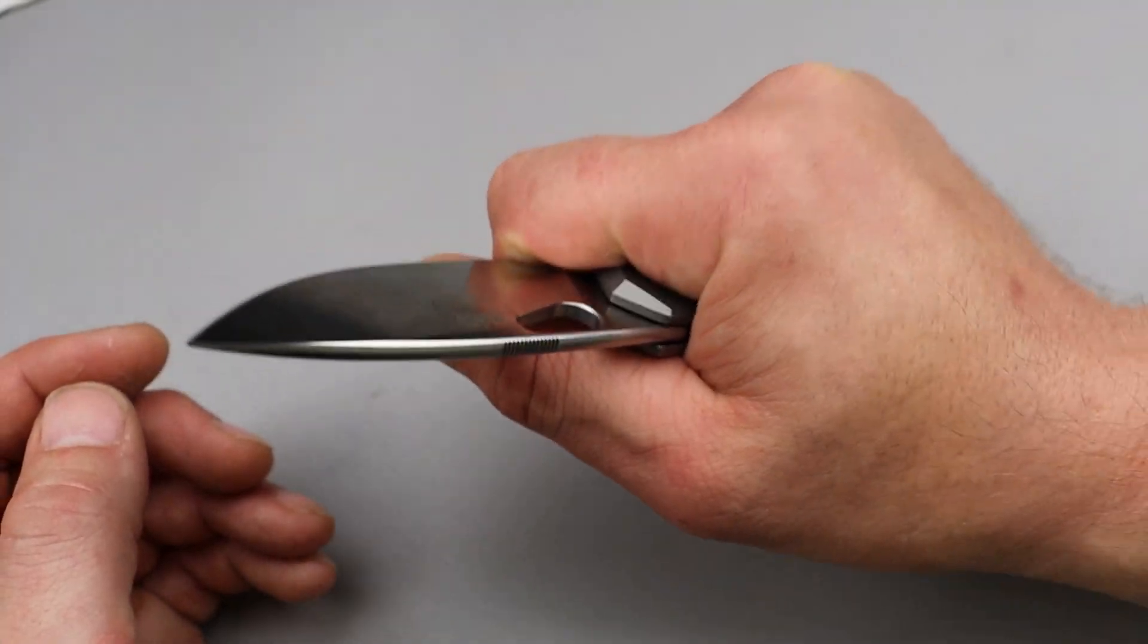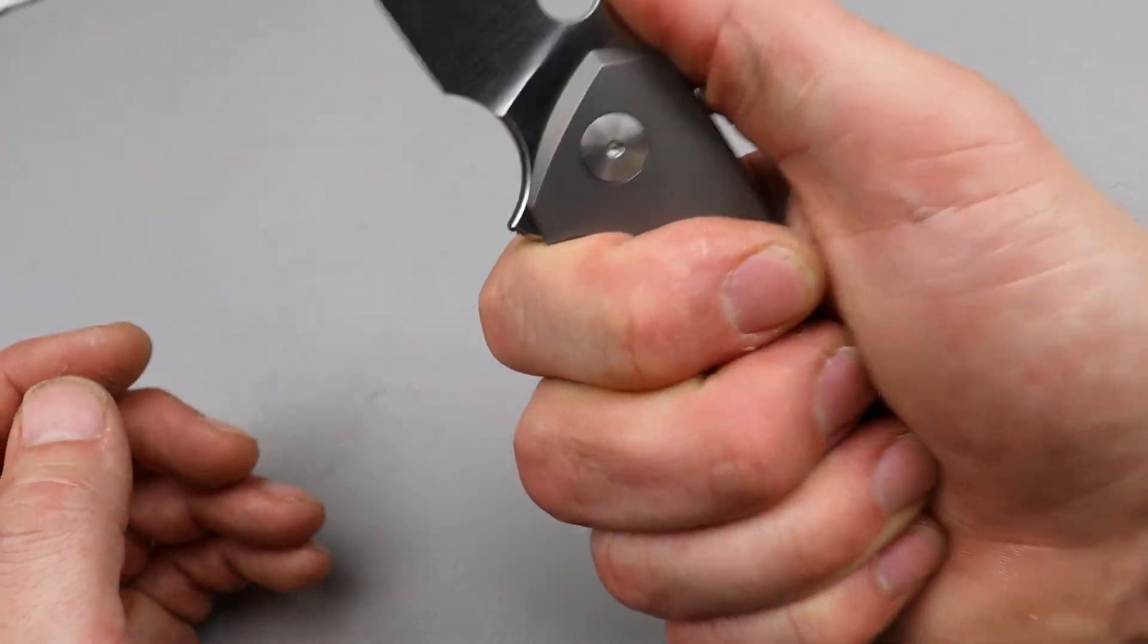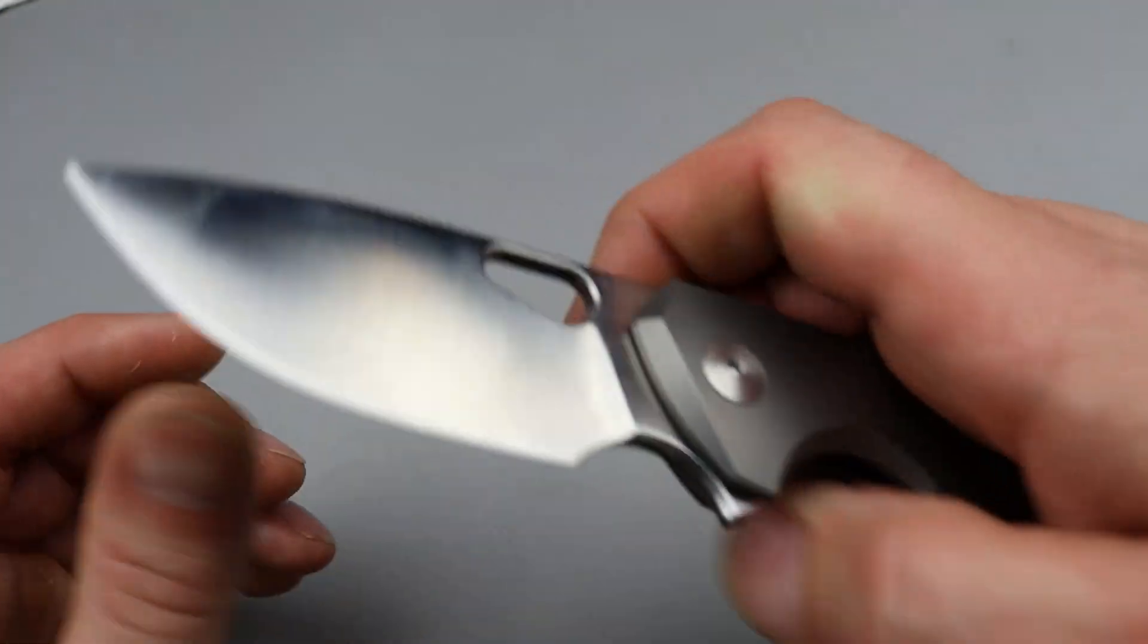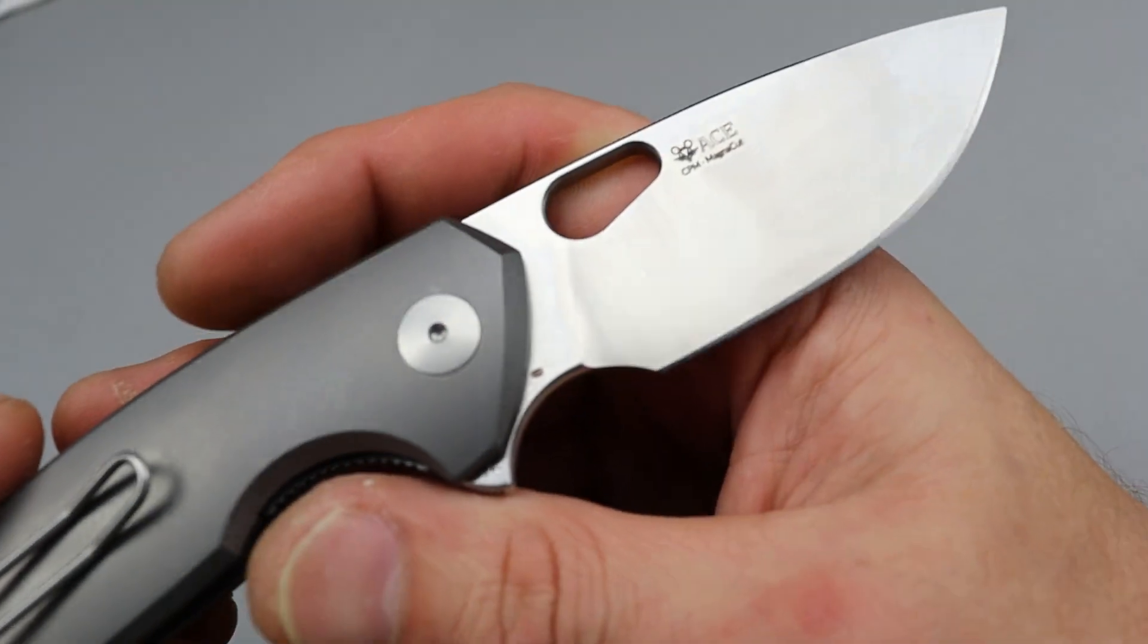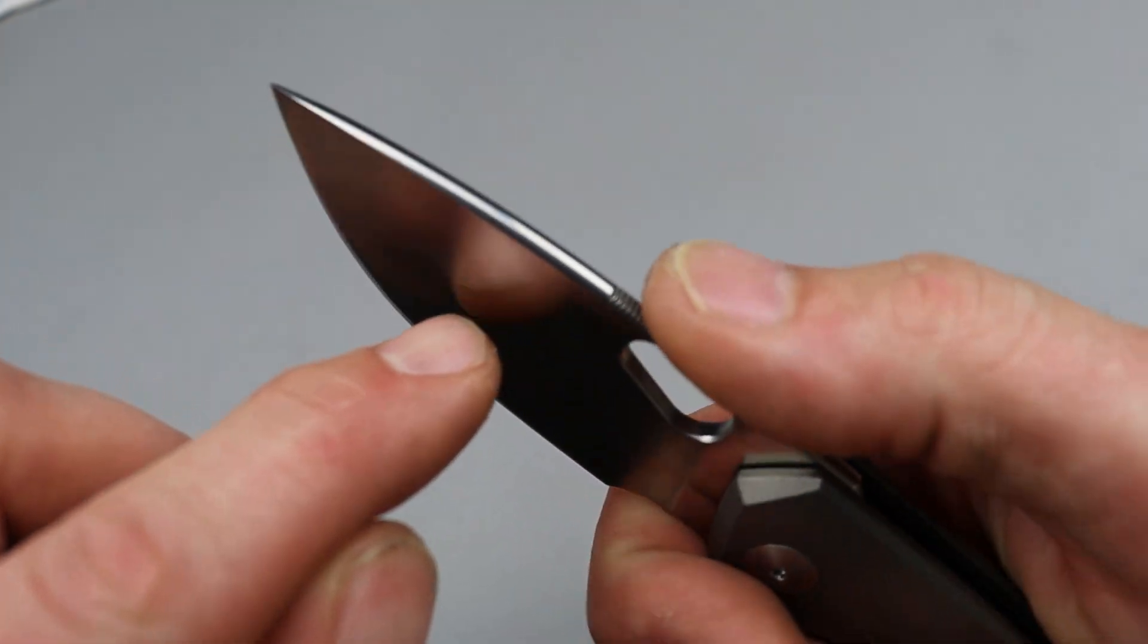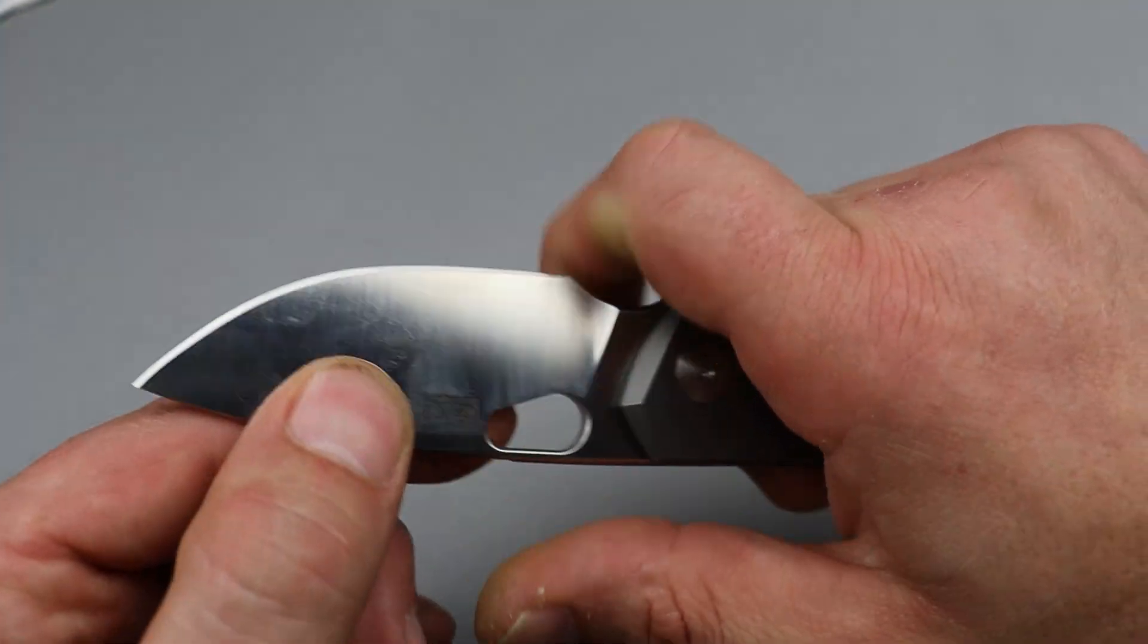I can get a good comfortable four finger grip. I can choke back and get a tight four finger grip. Magnacut drop point blade. Beautiful satin finish. And it has a nice crowned spine on the Magnacut blade.